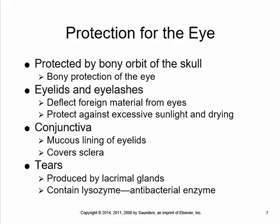The eyeball sits in the orbit, which provides bony protection to this delicate structure. The eyelids and eyelashes deflect foreign material, prevent the cornea from drying out, and protect from excessive sunlight. There's a mucosal lining of the eyelid that covers the white of the eye called the conjunctiva. We produce tears from glands that secrete onto the eyeball — they contain antibacterial enzymes that lubricate and have antimicrobial properties.